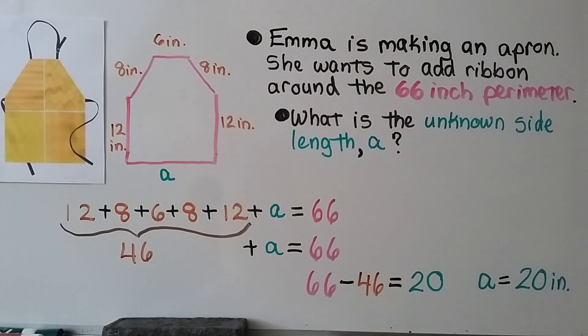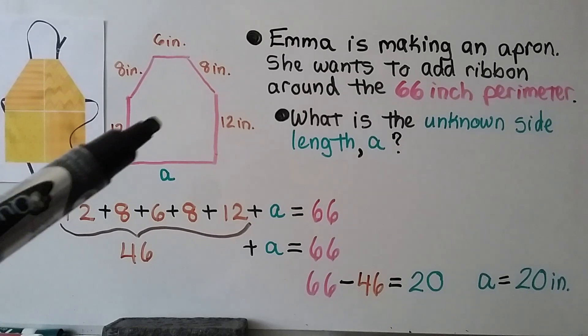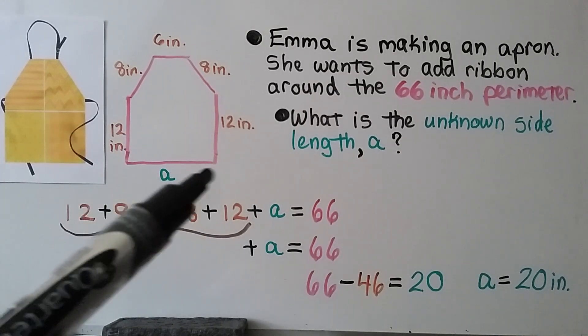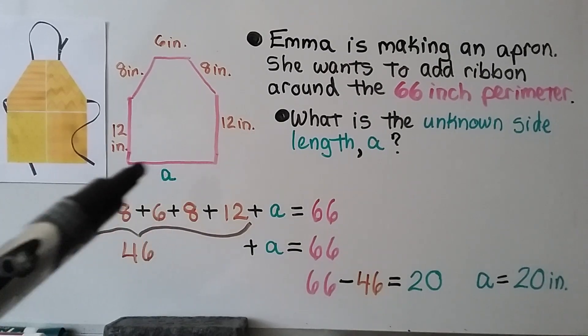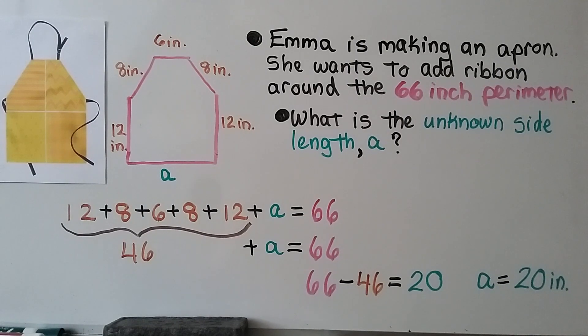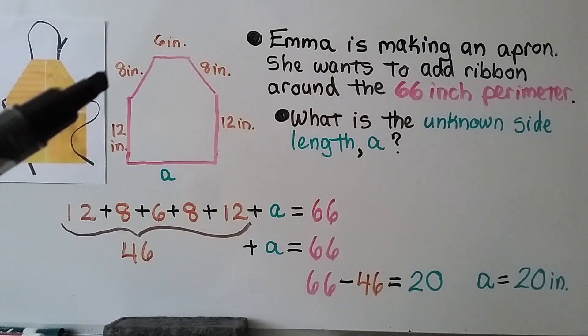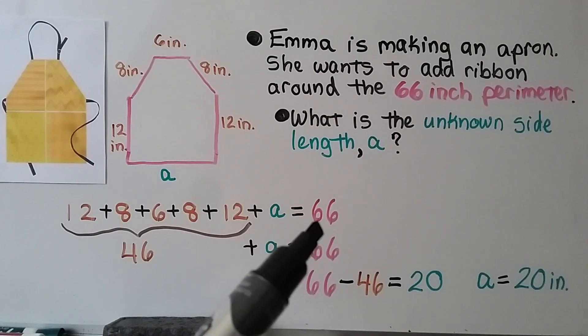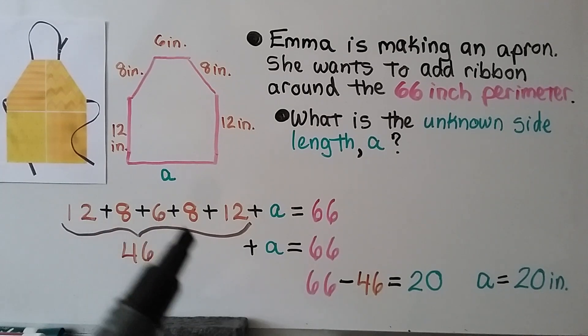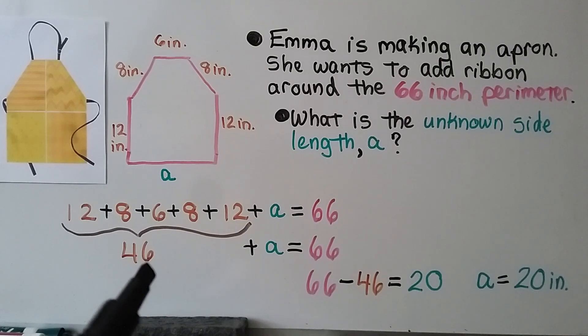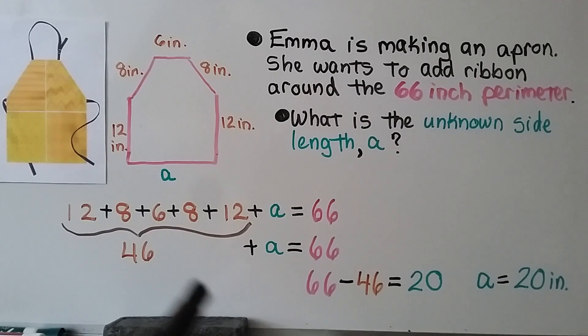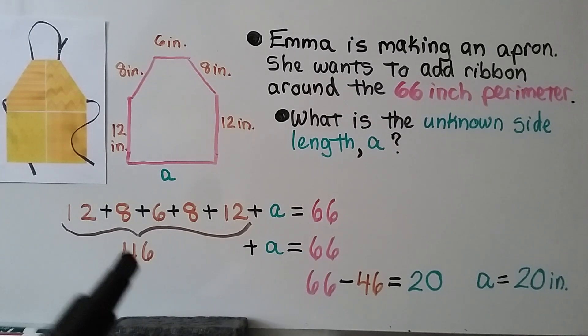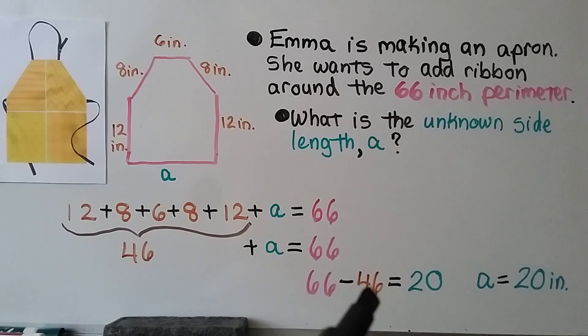Emma is making an apron. She wants to add ribbon around the 66 inch perimeter, around the outside. So it would look like this, but she's missing this bottom length right here. So we're going to call that a for the unknown length. That variable will be a. So what is that unknown side length a? We can add 12 plus 8 plus 6 plus 8 plus 12 plus a, the unknown length, and it will equal the 66 inch perimeter. We find the sum for the given numbers we do know and we get 46. That means 46 plus a equals 66. We take the 66 inch perimeter and subtract the amount we do know, the 46. 66 minus 46 equals 20. That means a equals 20 inches.